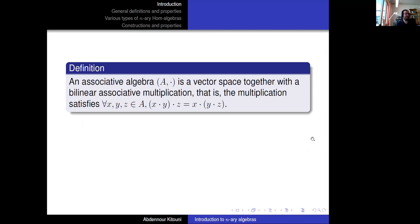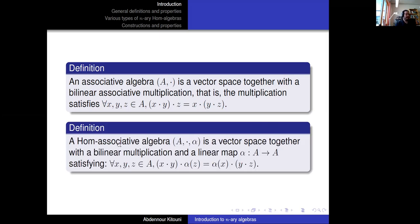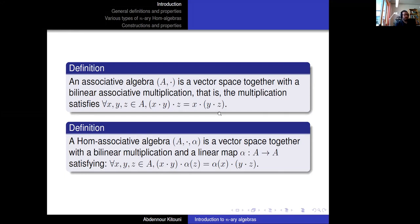An associative algebra, as everyone knows, is a vector space with a bilinear associative multiplication satisfying the associativity property. A hom-associative algebra is a generalization: it is a vector space together with a bilinear multiplication and an extra linear map from A to A, satisfying the hom-associativity property.